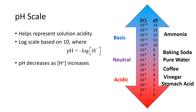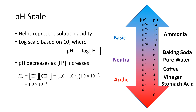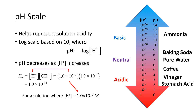This means that the pH decreases as the concentration of H+ increases. In a neutral solution, the concentration of H+ and OH− are equal. Their product must be 1.0 times 10 raised to the minus 14, which means that the concentration of both H+ and OH− must be 1.0 times 10 raised to the minus 7. The pH is equal to the negative log of this concentration.